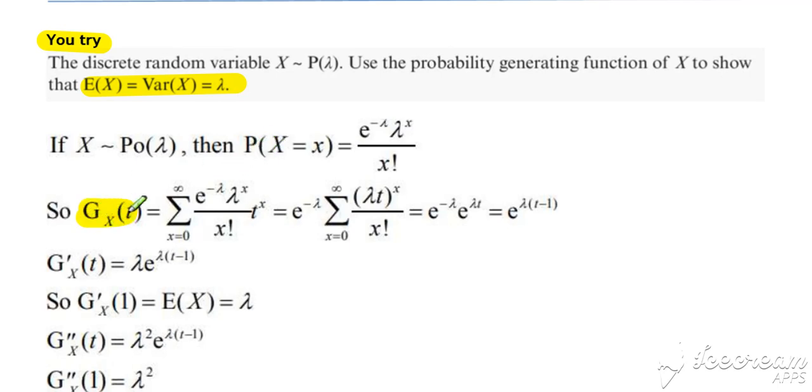The probability-generating function for a Poisson is the probability for Poissons multiplied by t to the x. That's your standard probability-generating function, giving our standard result for the probability-generating function of a Poisson, e to the lambda times t minus 1. Okay, so you could have just gone straight to that stage and quoted your result.